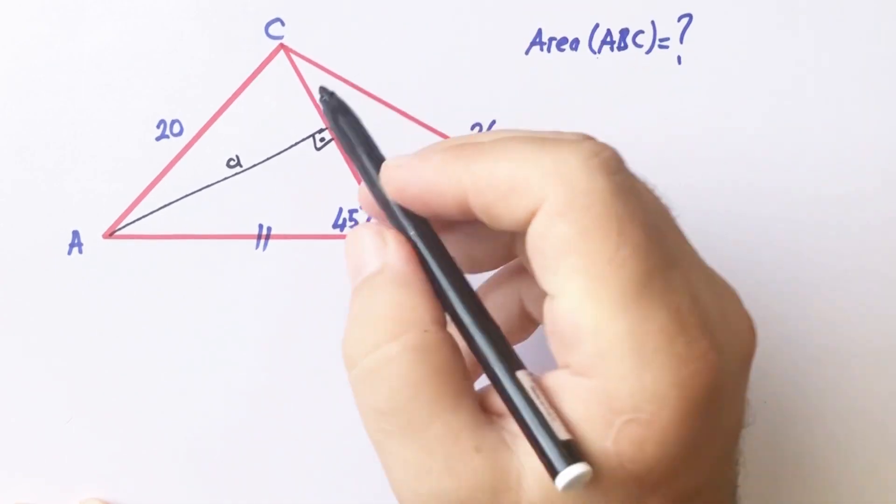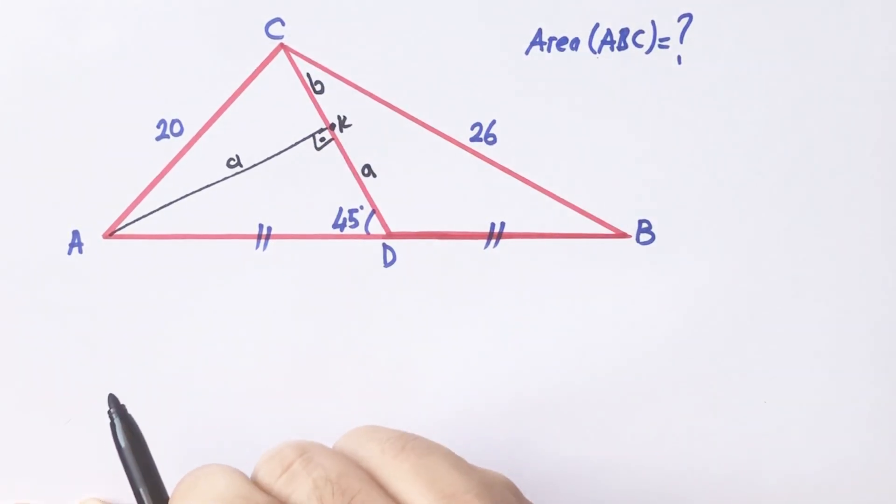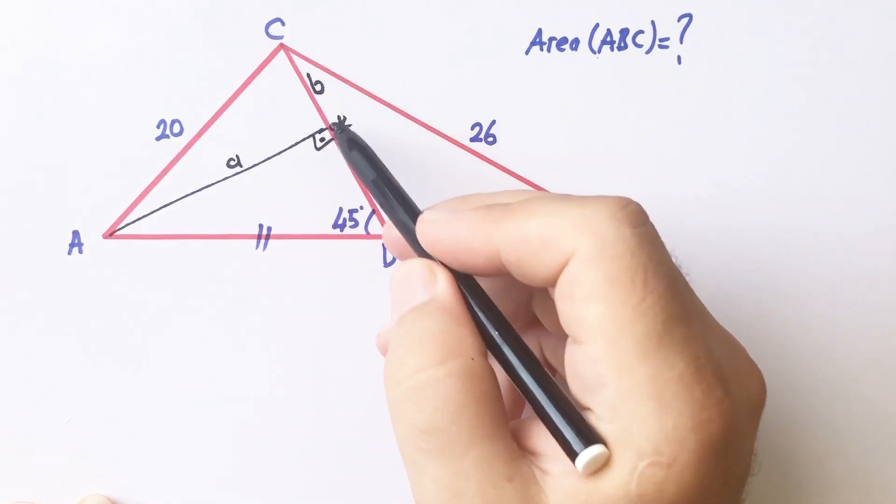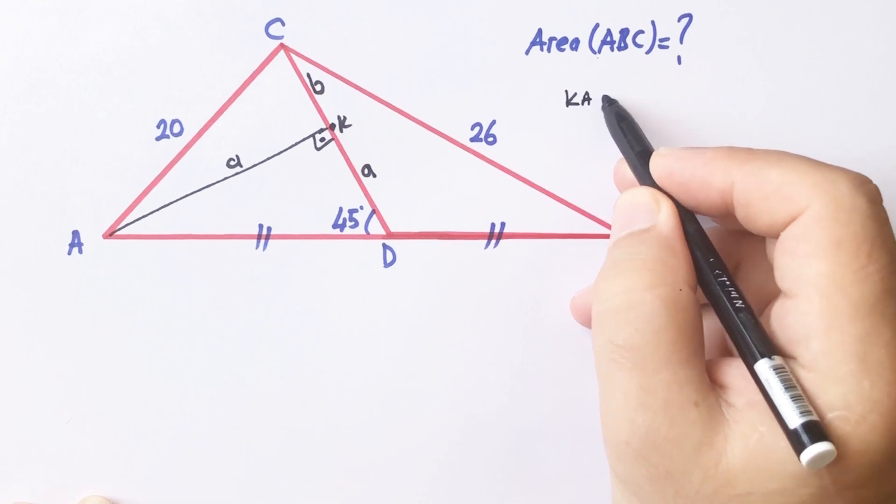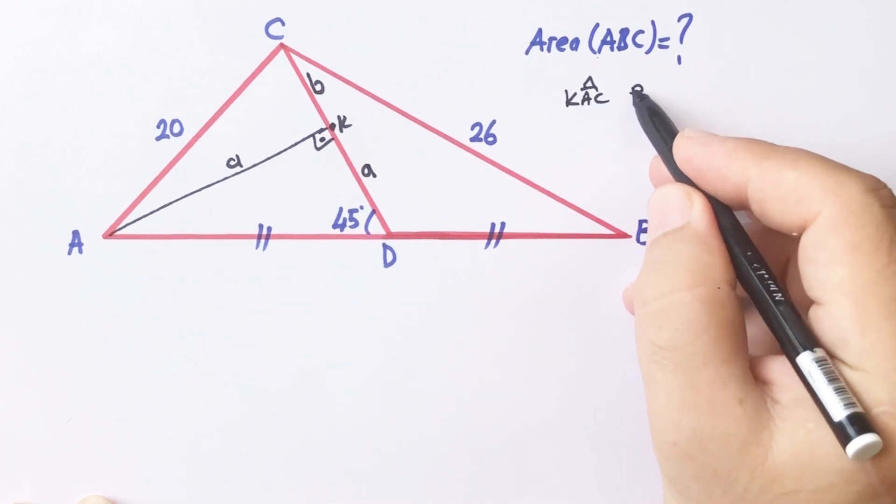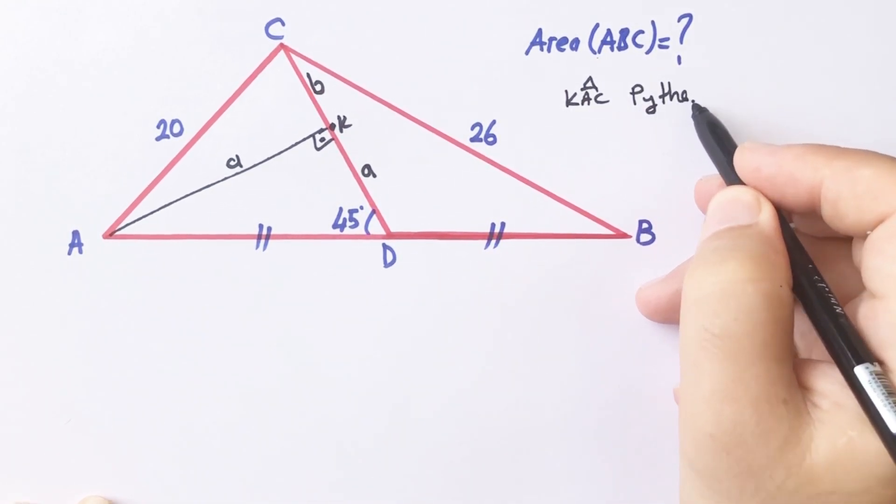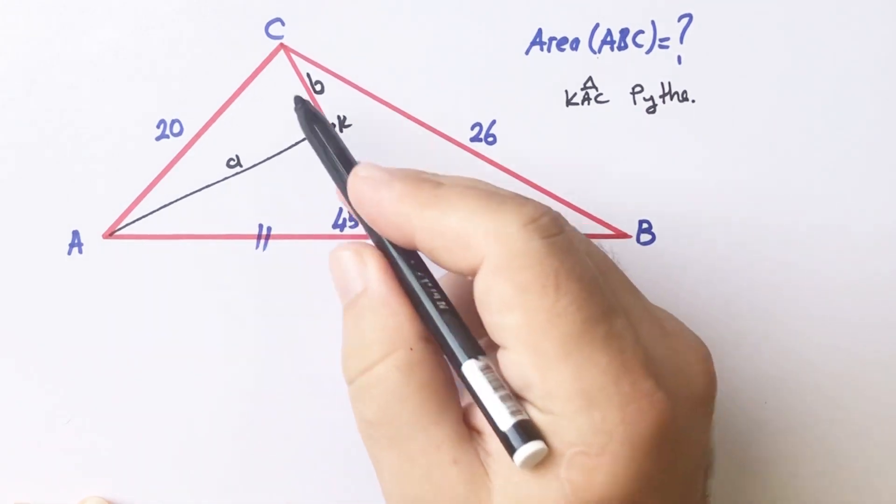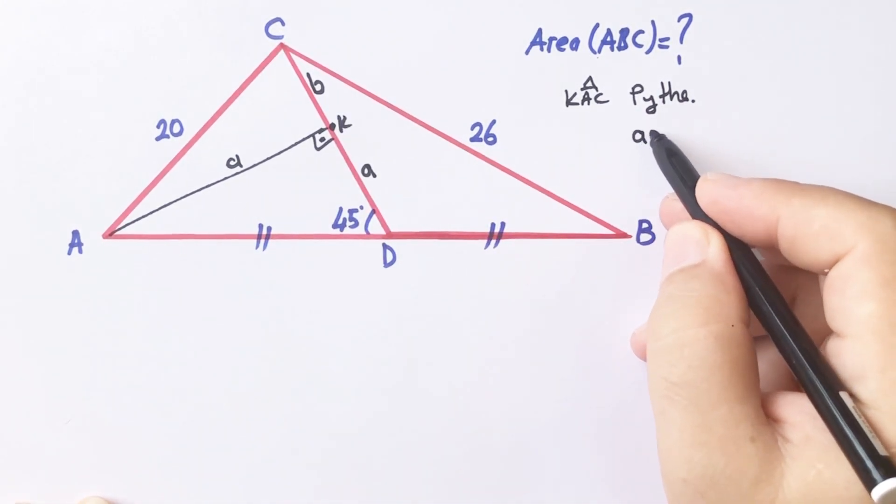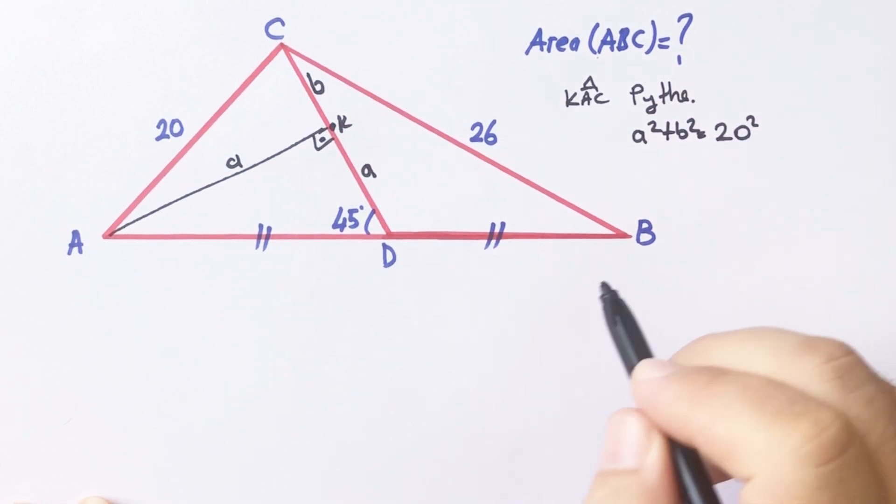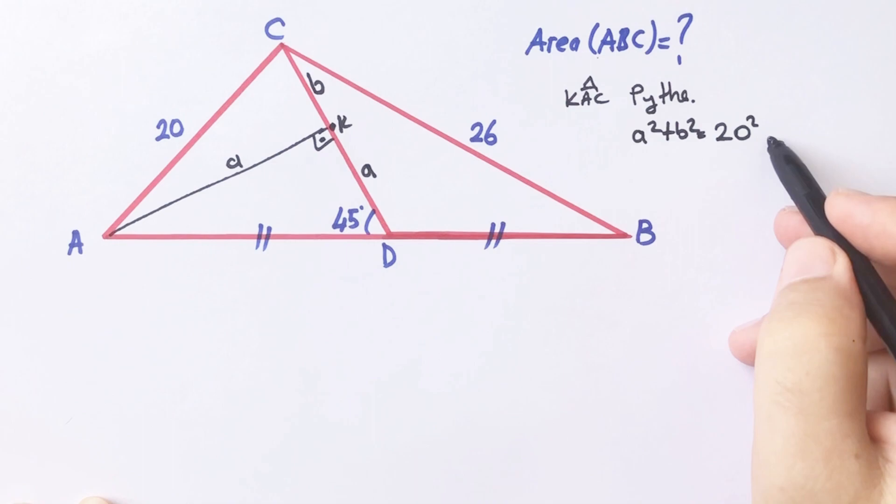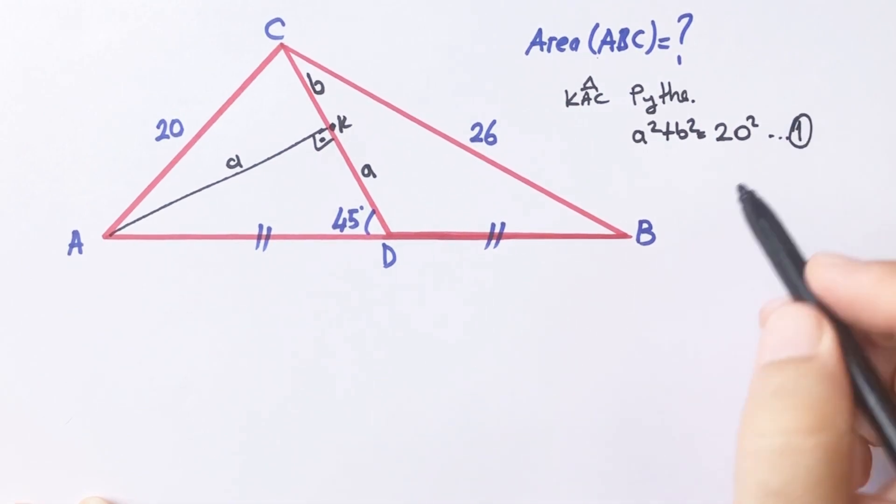And then, let's call here b unit. For this triangle, if we apply Pythagorean theorem, a squared plus b squared equals 20 squared. This is the first equation.